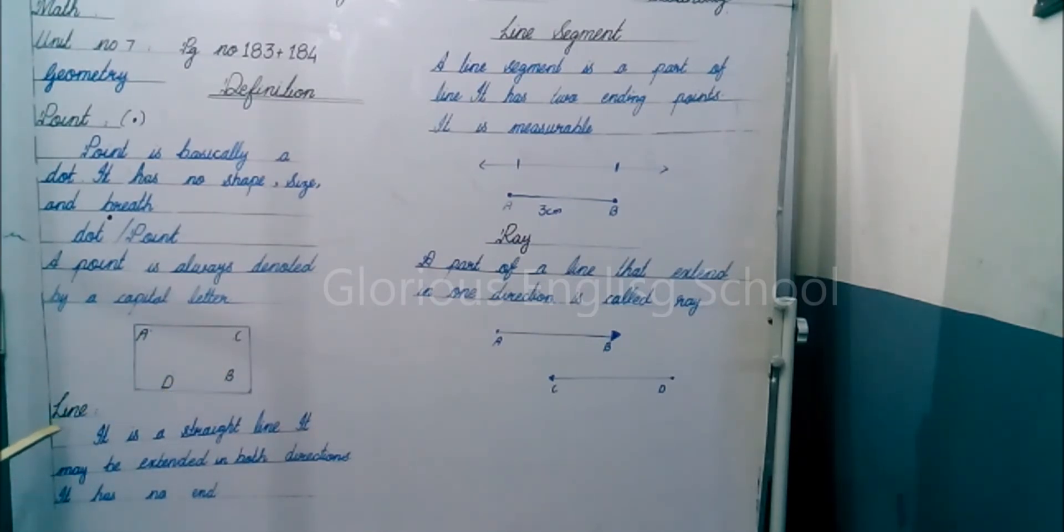Then you have a line. What is a line? It is a straight path. It may be extended in both directions. It has no end.